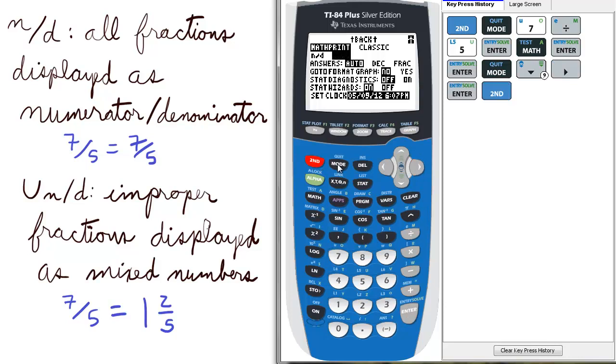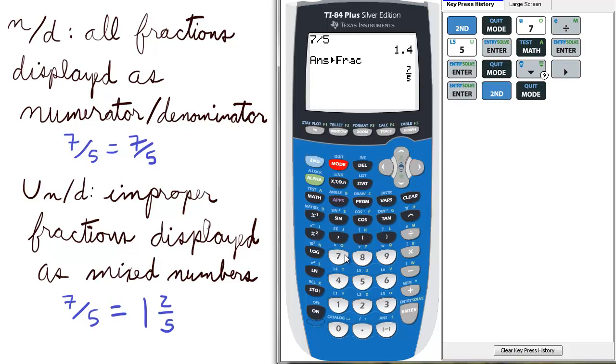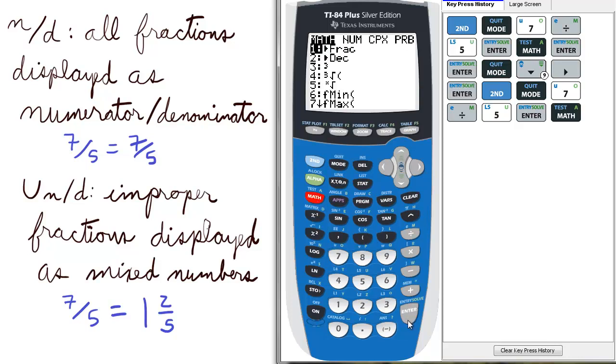And we will quit to the home screen. If we take 7 divided by 5, the decimal equivalent is still 1.4. And we press math, enter, enter to make it a fraction. The fraction is displayed as a mixed number, 1 and 2 fifths.